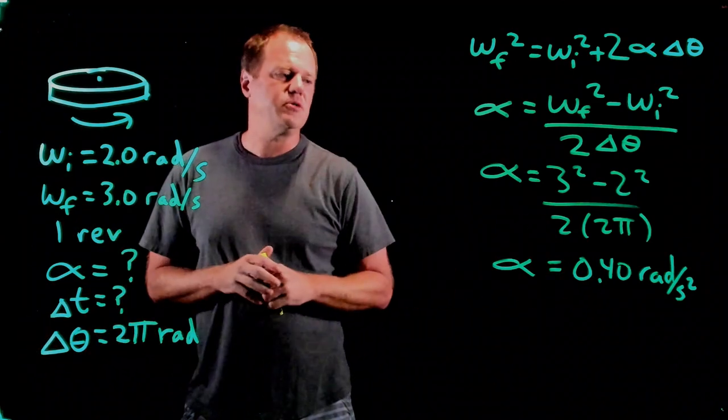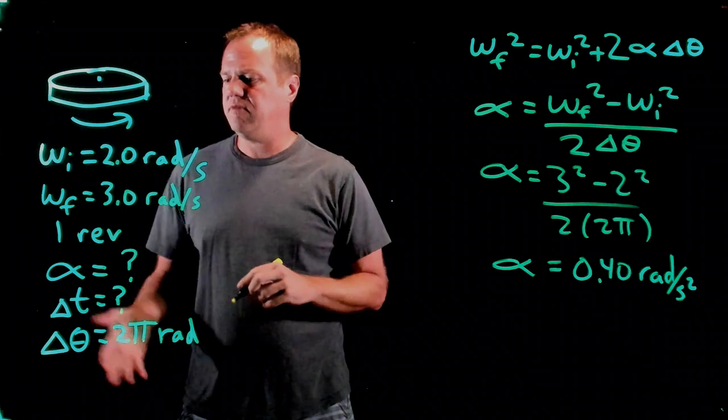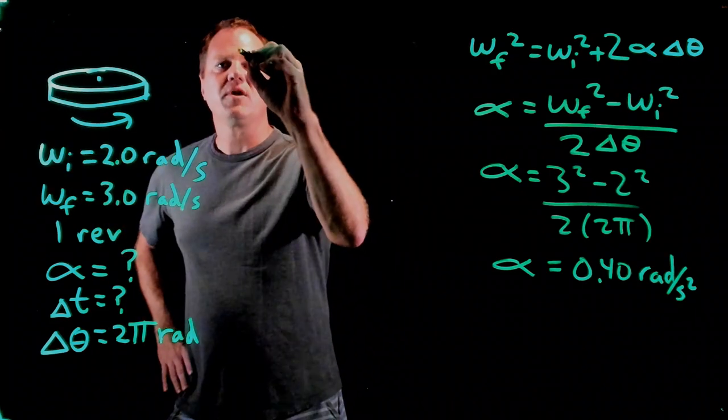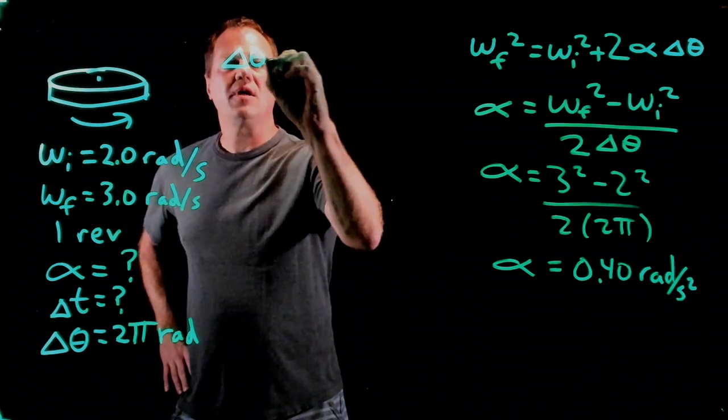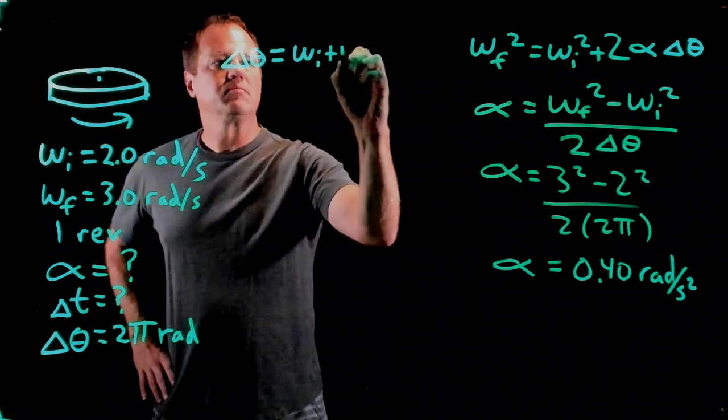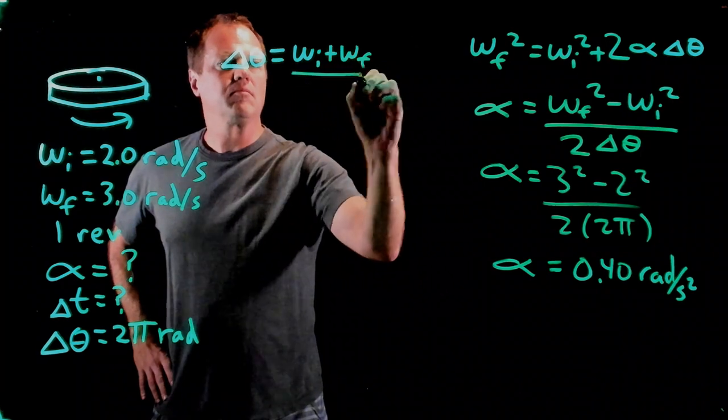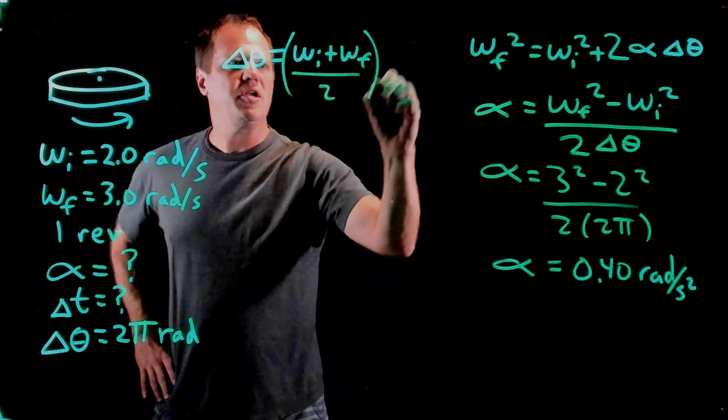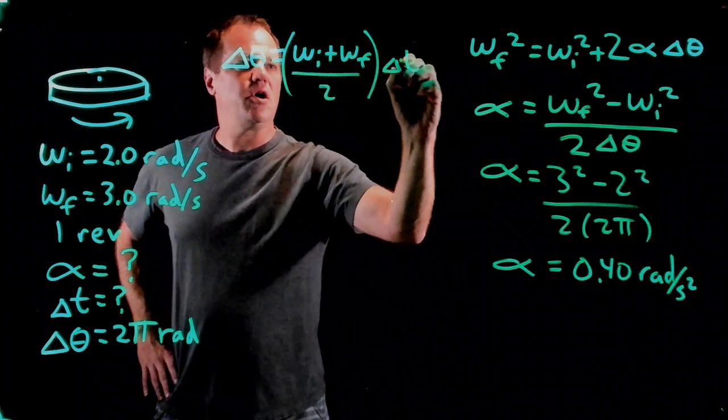I'm going to pick this one that relates the time to these three variables. You could choose one that includes the angular acceleration that we calculated, but I'm going to go ahead and use this one. So here's a constant angular acceleration kinematics equation which involves three knowns plus the unknown time interval.